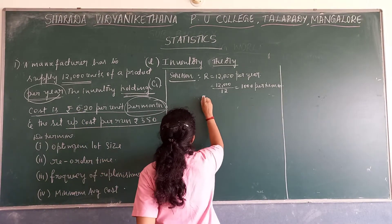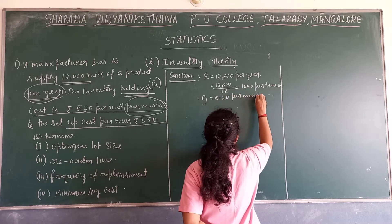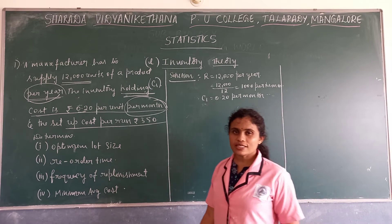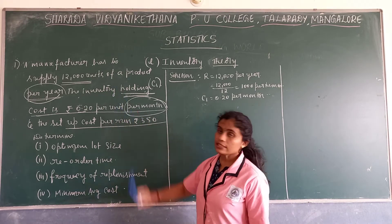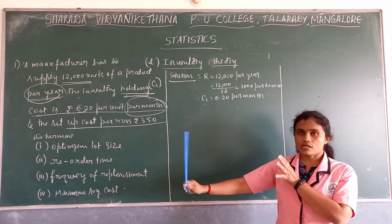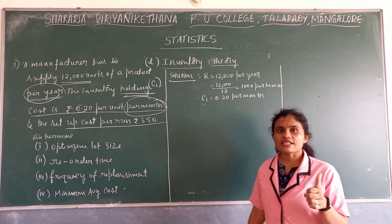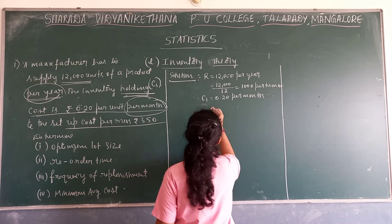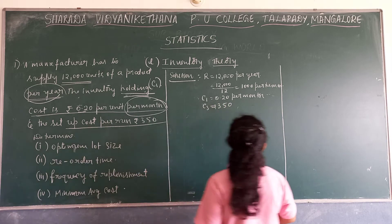The value of C1 is 0.20 per month per unit. The setup cost per run is Rs. 350. For other values, it is not necessary to observe whether they are per month or per year — only C1 and demand need that check. We always convert demand according to C1; C1 is written as given. So C3, which is the setup cost, reorder cost, or procurement cost, equals Rs. 350.